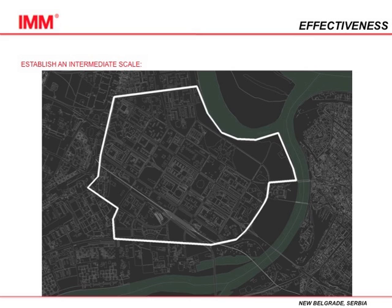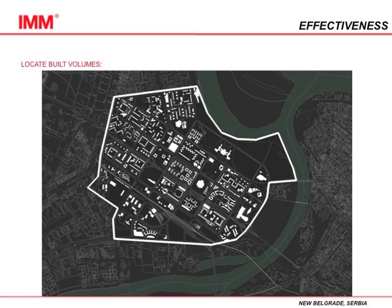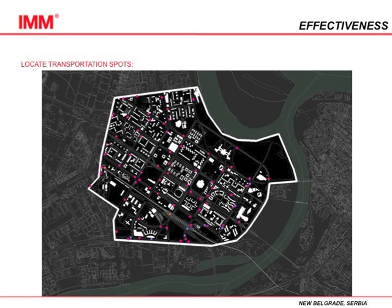First, we start off with the intermediate scale, which was established during the horizontal process of the investigation. Then we locate the built volumes in that area. Here you can see all the buildings in white — these are all the built volumes in this intermediate scale.